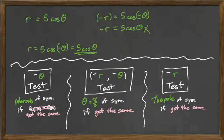So boom, it fails that test. Right now we do not know if there's symmetry about the theta equals pi over 2. Notice I said we do not know. Can there still be symmetry there? Yes, but we don't know for sure. So we can't use that symmetry to help us graph.